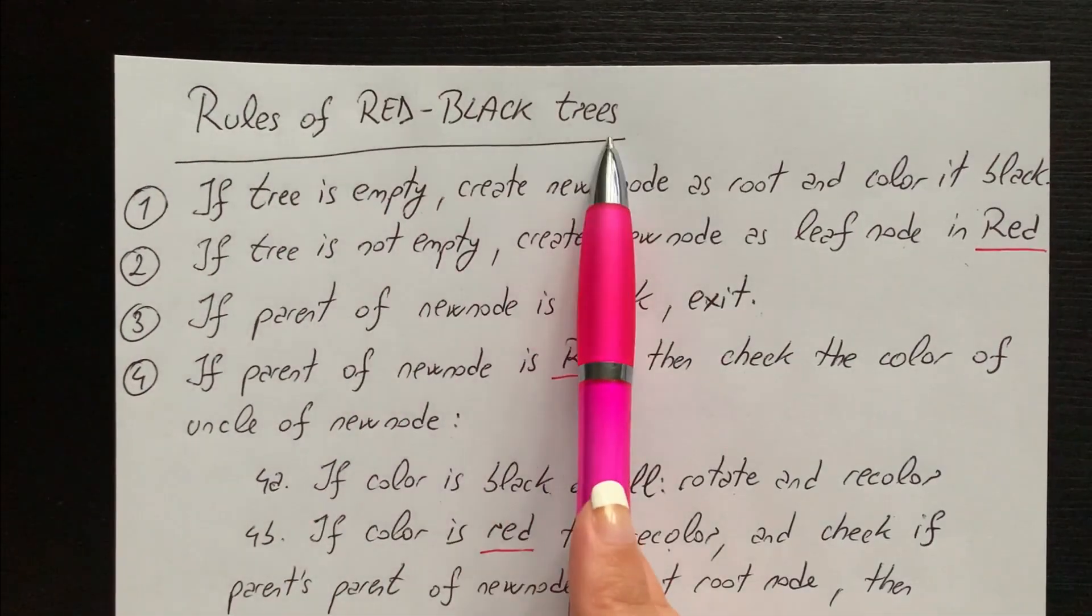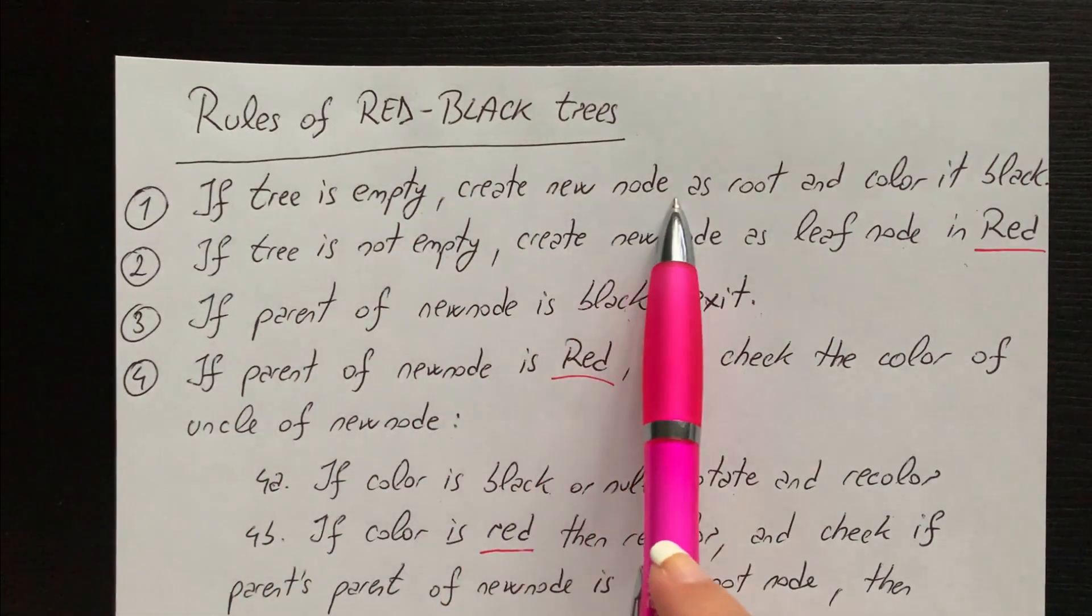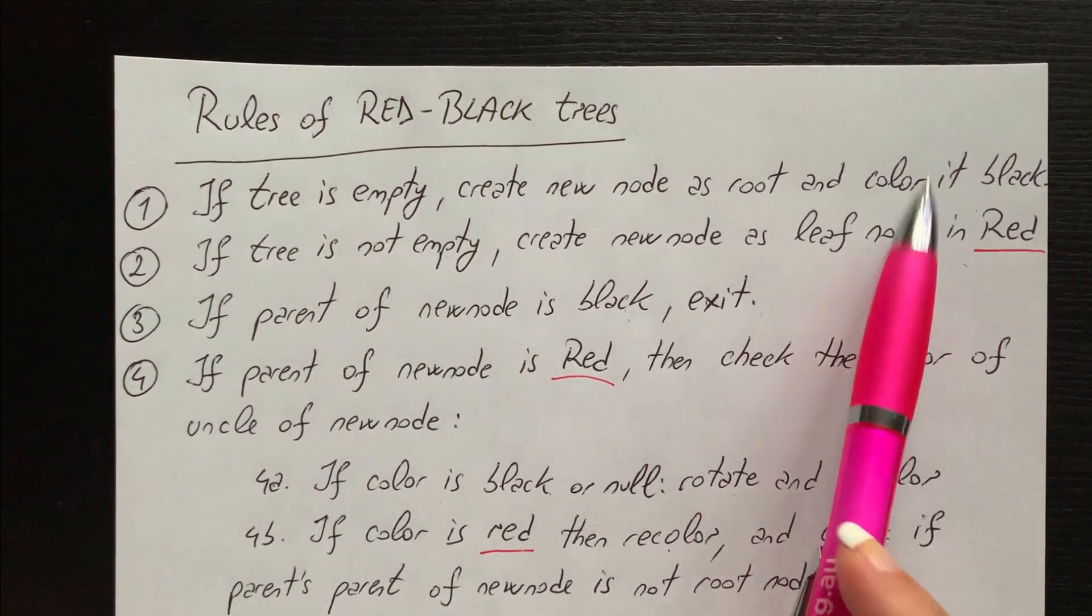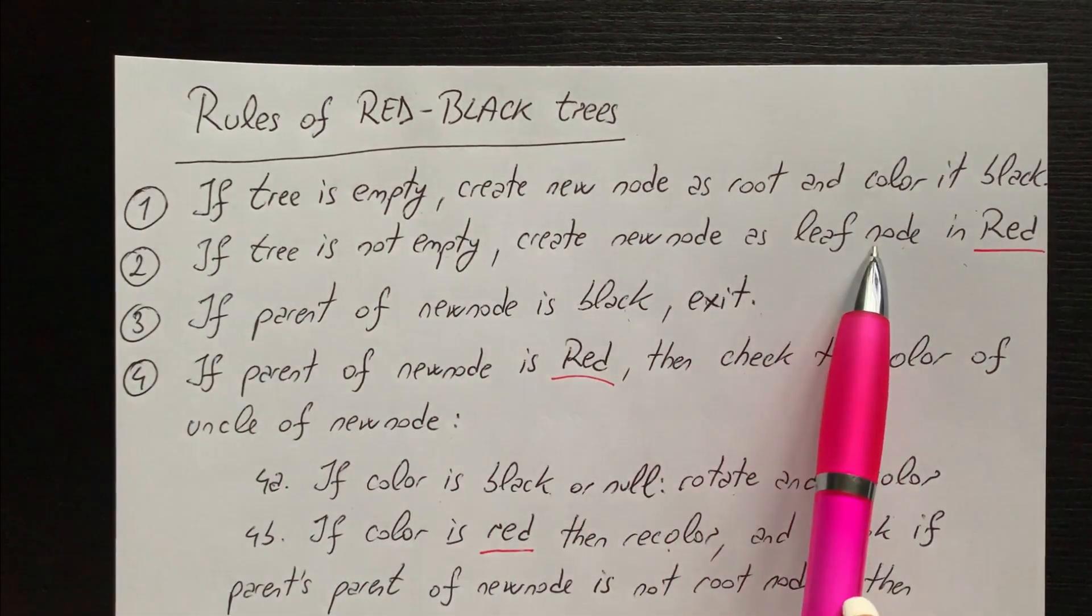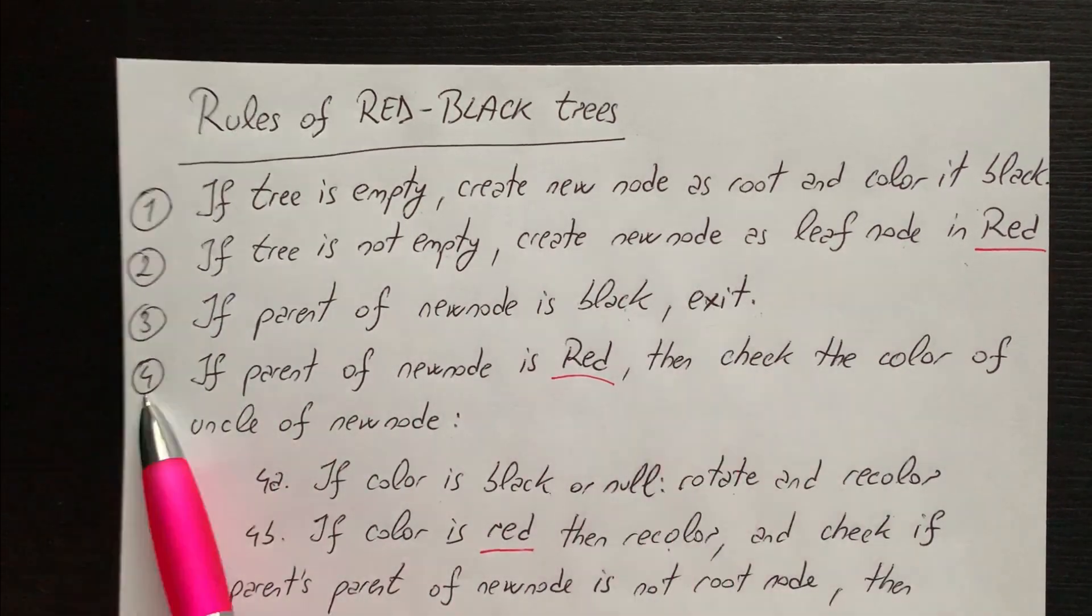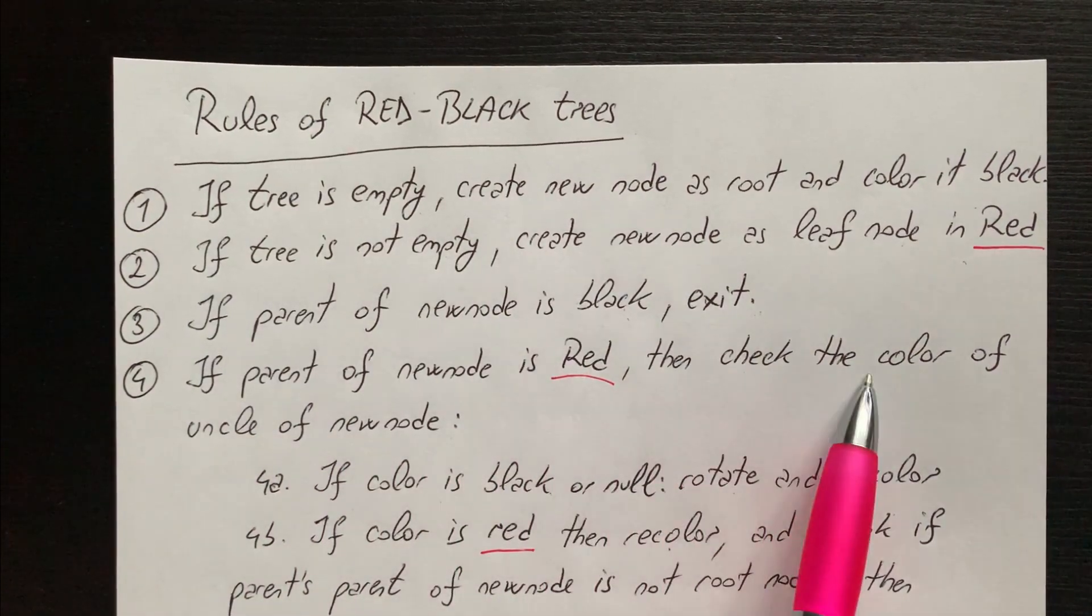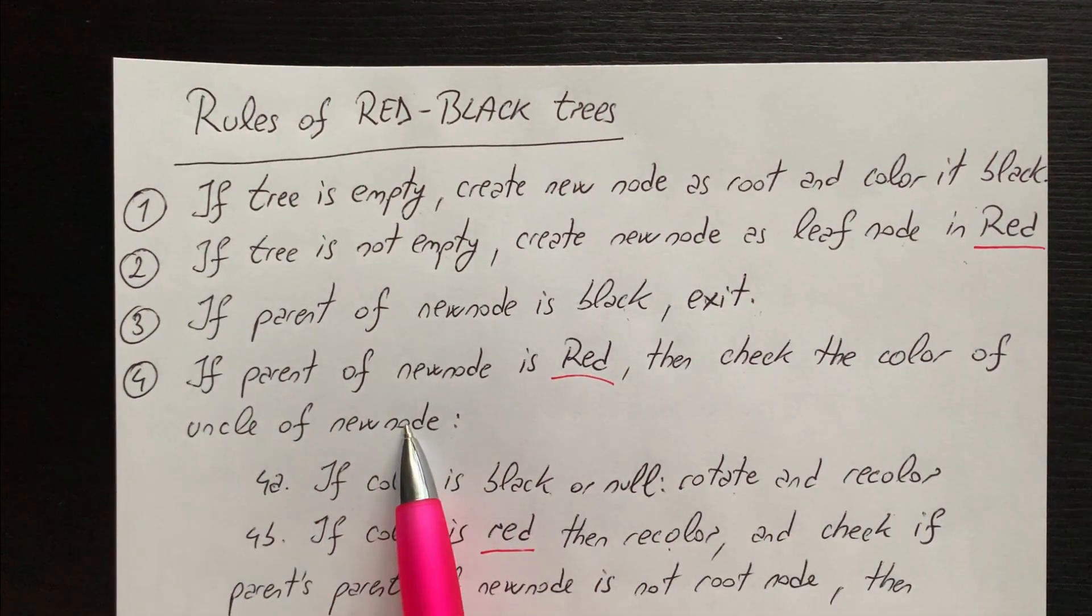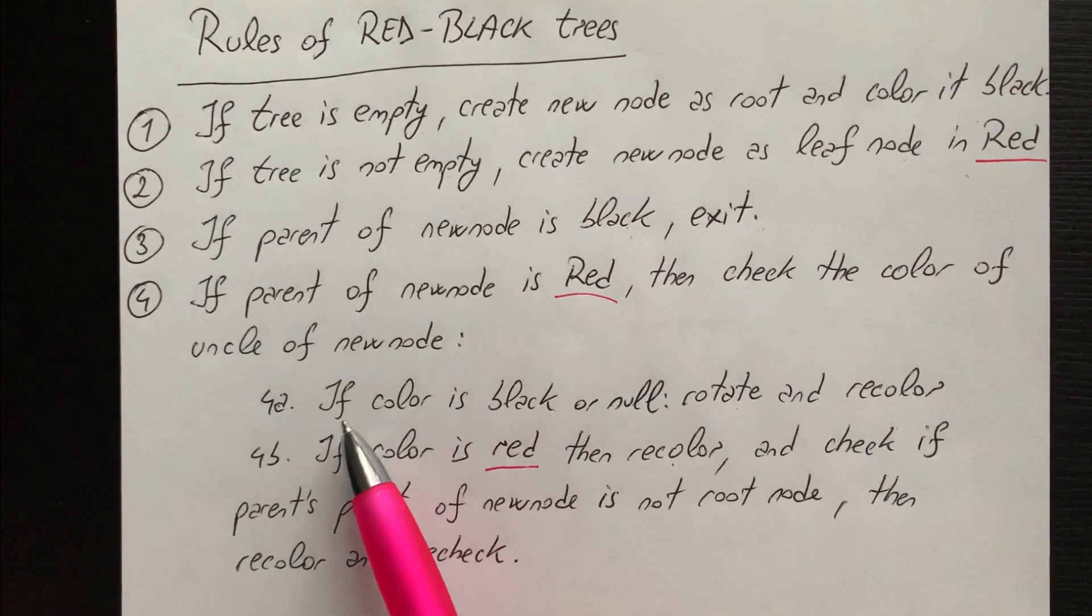Okay so here I wrote out the rules of red black trees. The first one is: if tree is empty, create new node as root and recolor it black. Second, if tree is not empty, create a new node as leaf node in red. Third, if parent of new node is black, exit. Fourth, if parent of new node is red, then check the color of uncle of new node.